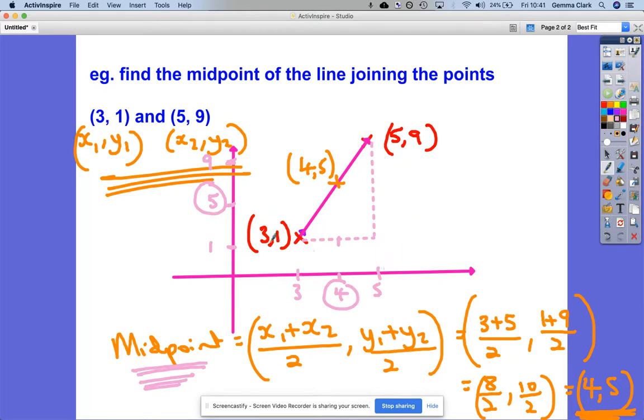So we don't always have to do this, you can if you like, but it's quite time-consuming. If we just use the formula, we'll get there every time, if we're careful. So 4, 5 is our answer. Hope that's nice and clear, enjoy the work.